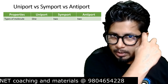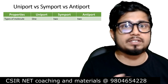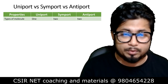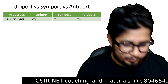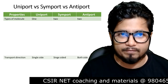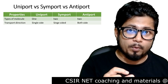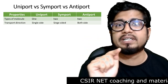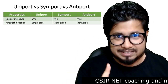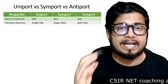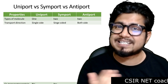First is the type of molecules. In uniport there is only one molecule, in symport two molecule movement, and for antiport again two molecules movement are involved. For transport direction, uniport — as the term suggests, uni means unidirectional — the direction is single-sided movement, while symport and antiport both involve double-sided movement.